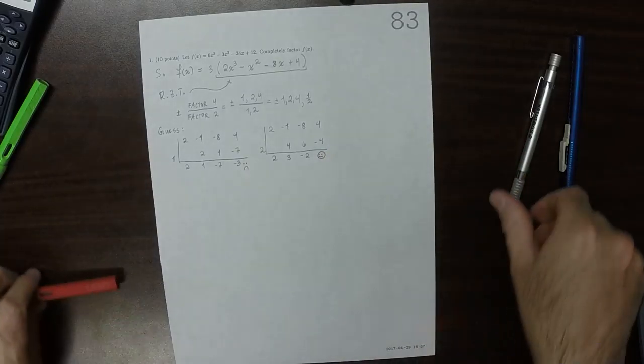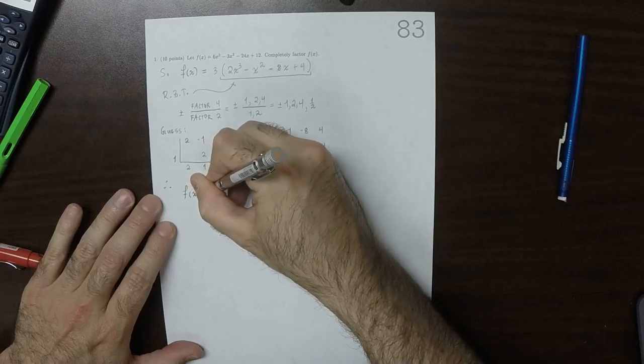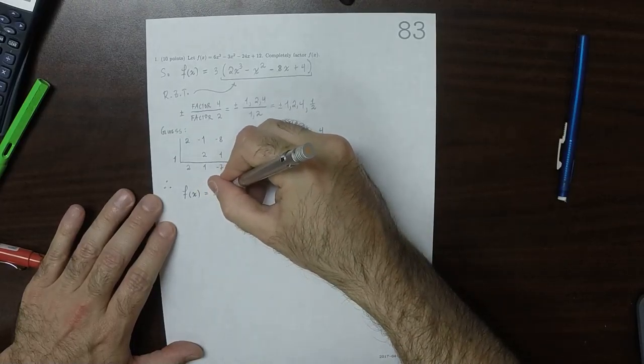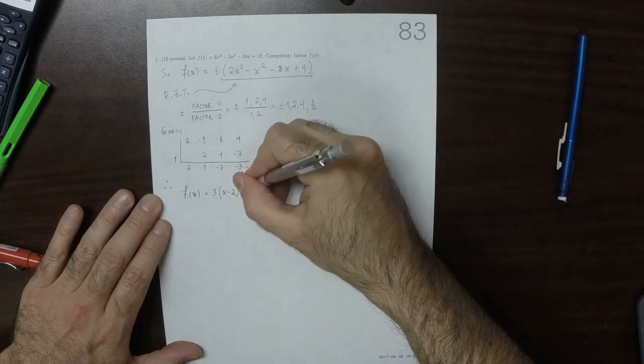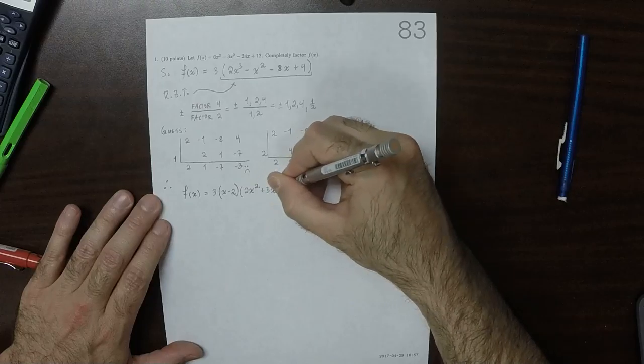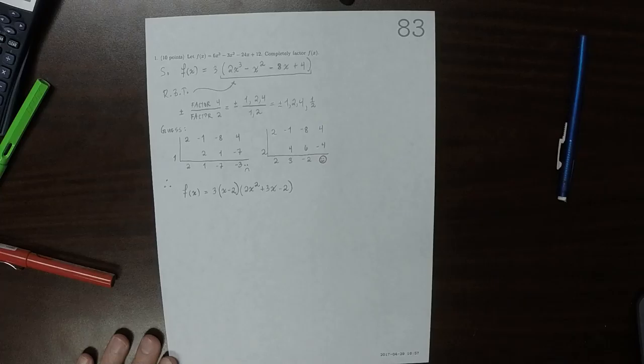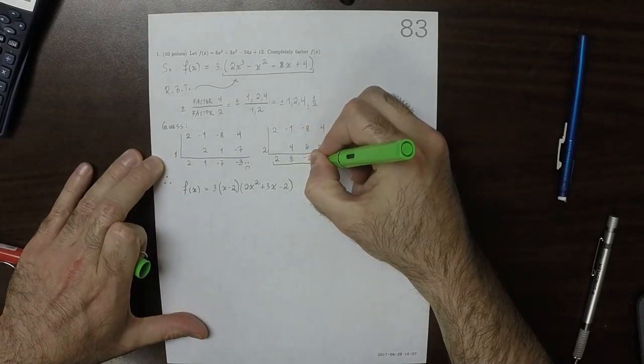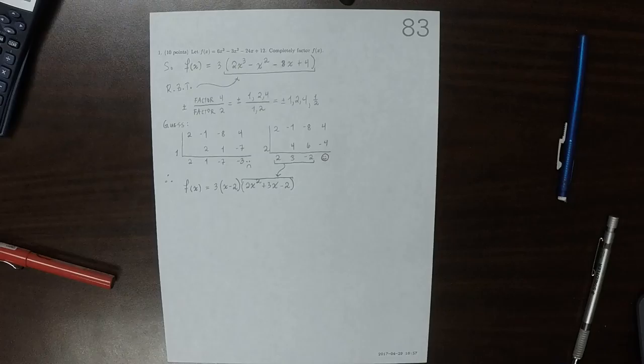So what that's telling us, therefore, f of x is 3, and then one of the factors is x minus 2, and the other factor is that, 2x squared plus 3x minus 2. Okay. So this quotient is this quotient.